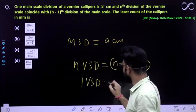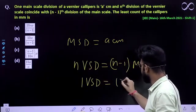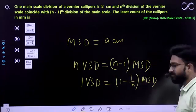So, one division of the vernier scale would be (1 - 1/n) times MSD.